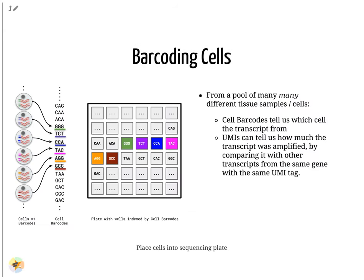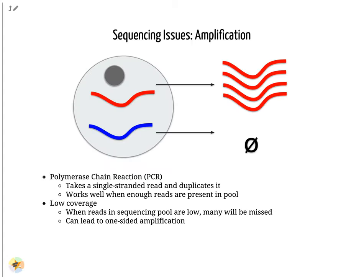Once the RNA molecules have been tagged by cell barcodes, they can be amplified, either separately or pooled together, where the amplified products share the same cell barcodes as their original counterparts. PCR amplifies the gene products to make them more easily detectable during sequencing. When there is a lot of gene product to amplify, as is the case for bulk RNA-seq, PCR works quite well in amplifying all products in a reasonably well represented manner.